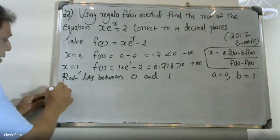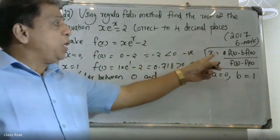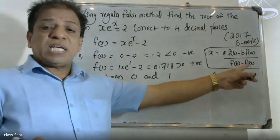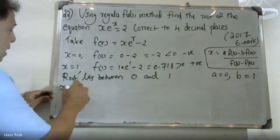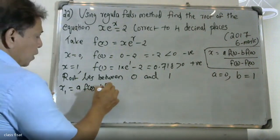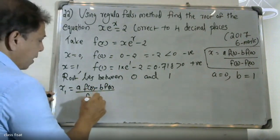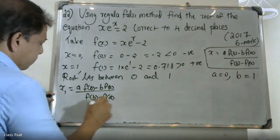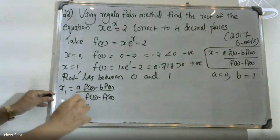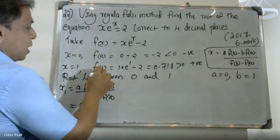Now we calculate X1 using the Regula Falsi formula: X1 = (A·f(B) - B·f(A)) / (f(B) - f(A)). Here A = 0, B = 1, f(A) = f(0) = -2, and f(B) = f(1) = 0.718.